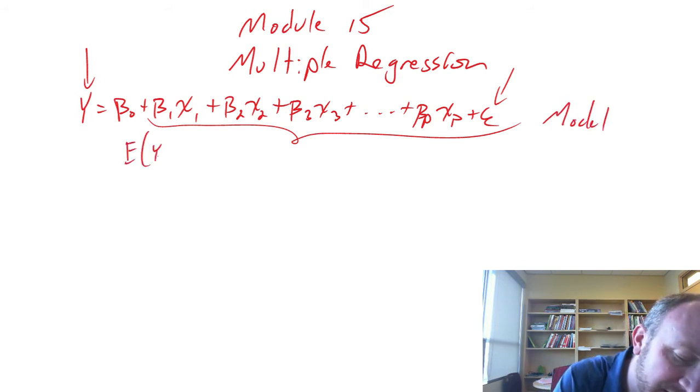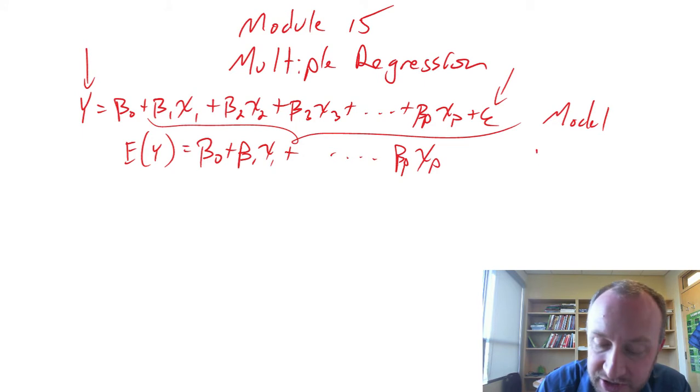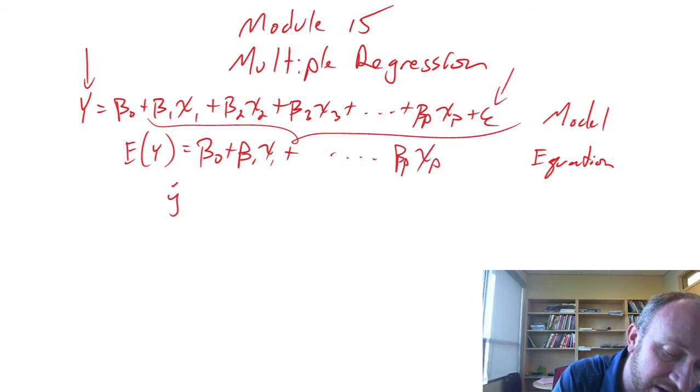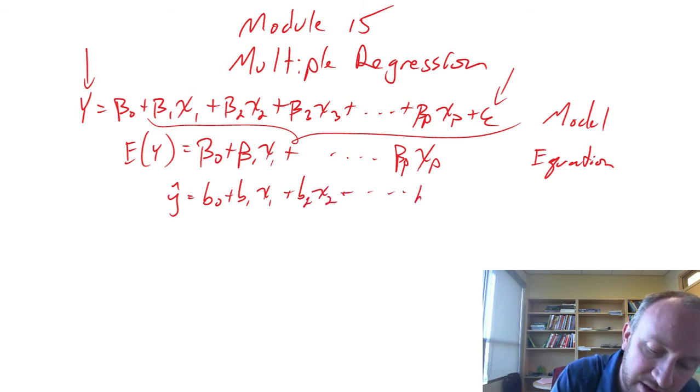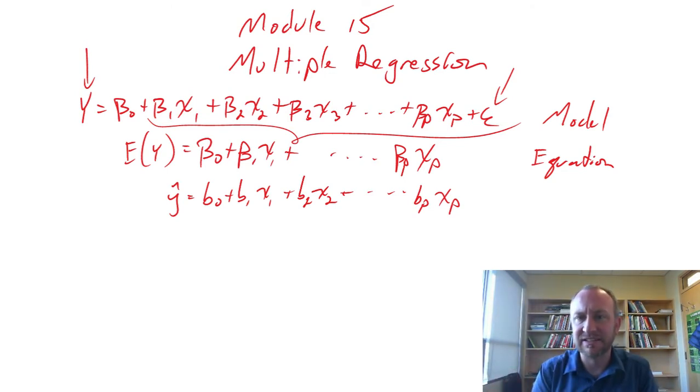The process here is the same. If we take the expected value of this, beta1 x1 plus on and on and on, beta p xp. So that gives us our regression equation and this is the one that we want to estimate. So then we have our estimated regression equation b0, b1, b2 and on and on for all of those independent variables. So again, it's very similar with module 14 but now we're just elaborating it. We're expanding it to allow for other independent variables.